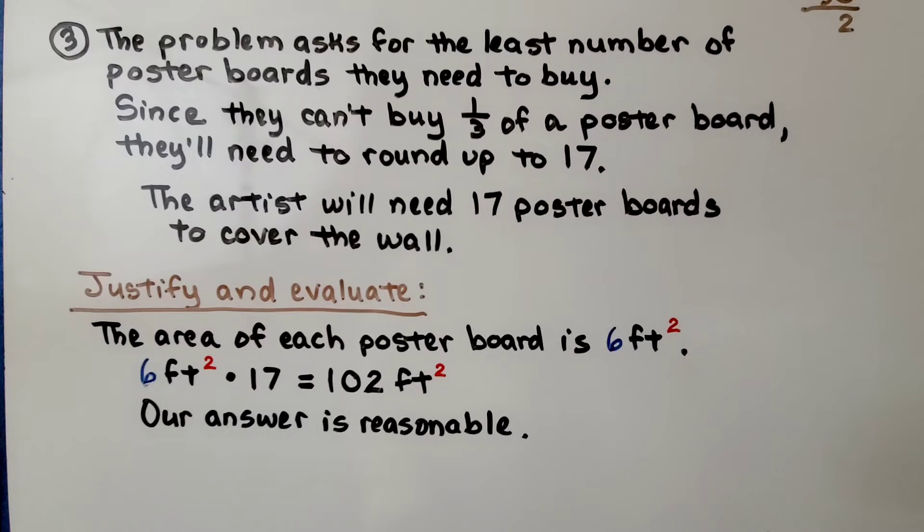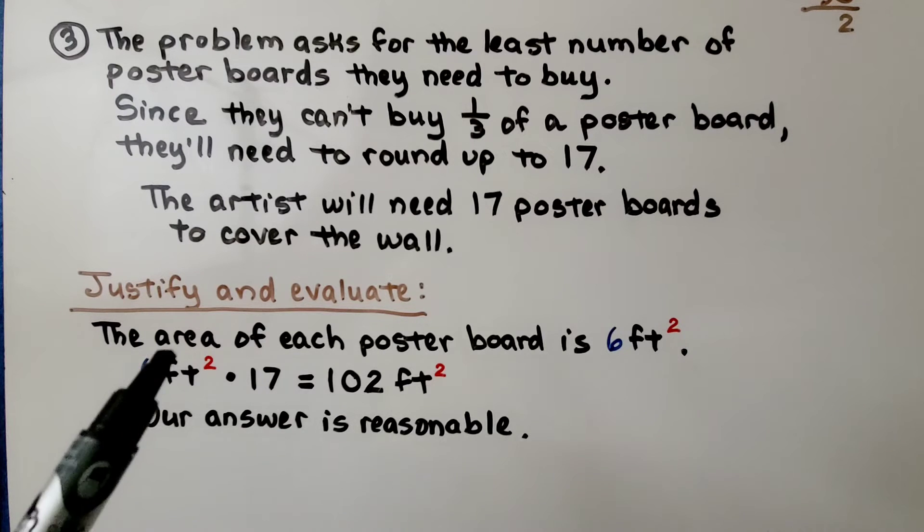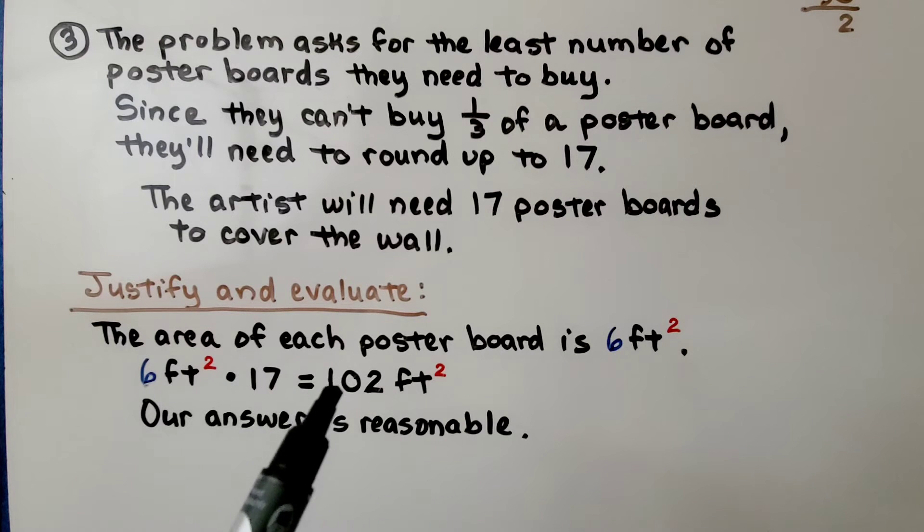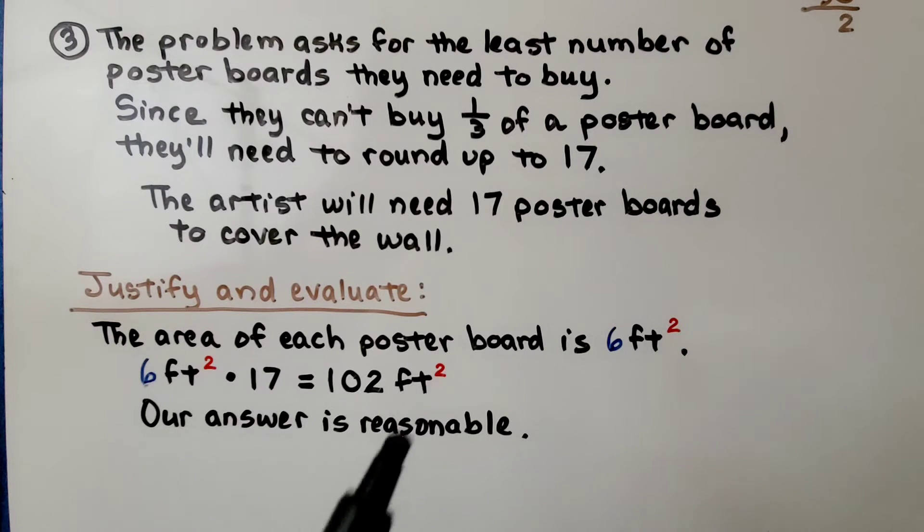We can justify and evaluate our answer. The area of each poster board is 6 square feet, and if we multiply 6 times 17, we'll get 102 square feet, which is plenty to cover a 92 square foot wall. So our answer is reasonable.